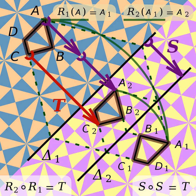In mathematics, an isometry is a distance-preserving transformation between metric spaces, usually assumed to be bijective.